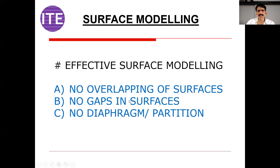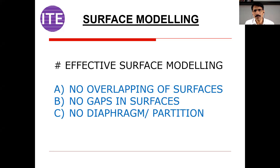For effective surface modeling, these are the important tips. First, ensure that when creating all surfaces, there are no overlapping surfaces, as this will create problems when using commands like sieve. Second, there should be no gaps between surfaces — even a small gap of 0.2 mm or 0.1 mm will prevent you from joining the surfaces. Third, there should be no diaphragm or partition — when you create all surfaces, there should not be any parting surface in between. If you follow all these important tips, you can improve your surface modeling and create very critical components.